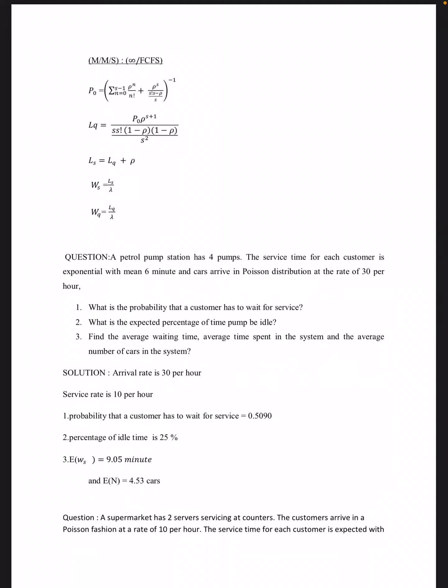Problem 1: A petrol pump station has four pumps. The service time for each customer is exponential with mean six minutes, and cars arrive in Poisson distribution at the rate of 30 per hour. The arrival rate is 30 per hour; service rate is given as six minutes, i.e., 1/6 per minute = 10 per hour. Converting to the same units and substituting into the equations gives the following answers.